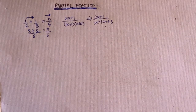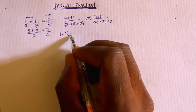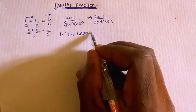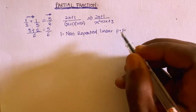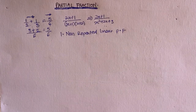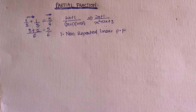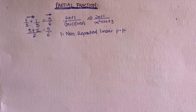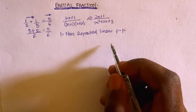We have five forms of partial fractions. The first form is the non-repeated linear partial fraction. In the case of non-repeated linear partial fractions, the denominator is not repeated and it should be in linear form. Generally, whenever we want to classify partial fractions, we classify them based on the denominator.